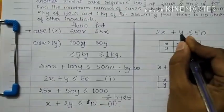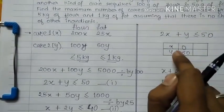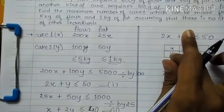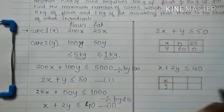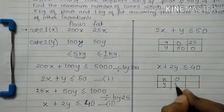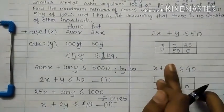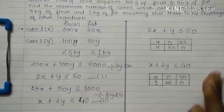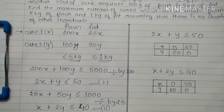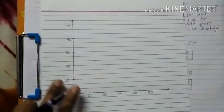For equation 1, if I put x = 0, then y = 50. And if I put y = 0, then x = 50/2 = 25. For equation 2, if I put x = 0, then y = 40/2 = 20. And if I put y = 0, then x = 40. These are the coordinates which I have to plot on the graph.